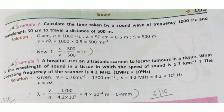Example 3: A hospital uses an ultrasonic scanner to locate tumors in tissue. What is the wavelength of sound in tissue where the speed of sound is 1.7 km/s and the operating frequency is 4.2 MHz (where 1 MHz = 10⁶ Hz)? Converting: V = 1700 m/s, n = 4.2 × 10⁶ Hz. Using lambda = V/n, we get lambda = 4 × 10⁻⁴ m, which equals 0.4 mm.